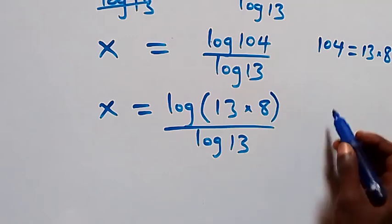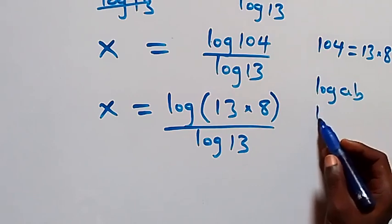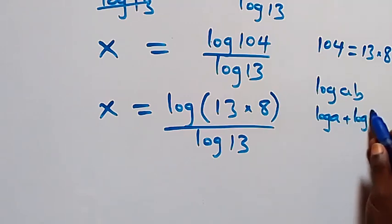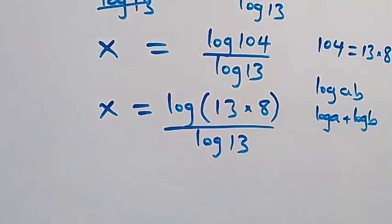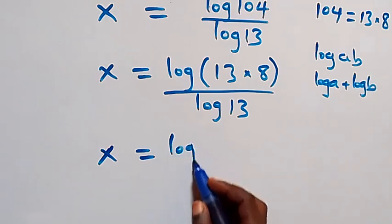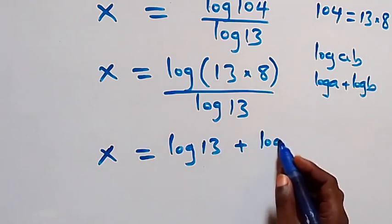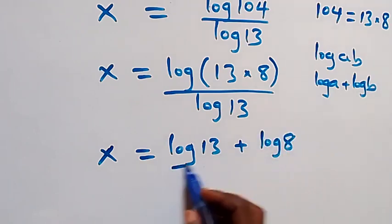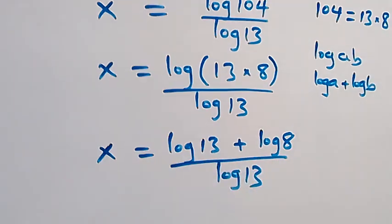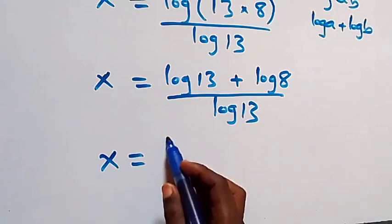Then we apply the product law of logarithm: log(a times b) can be written as log a plus log b. So what we have becomes x equals to log 13 plus log 8, over log 13.